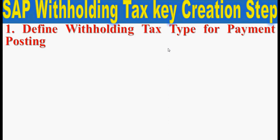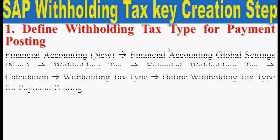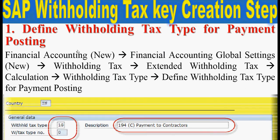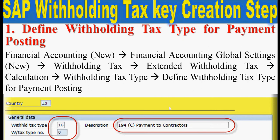First step is to define the withholding tax type for payment posting. You can also define for invoice posting. The path is: Financial Accounting New > Financial Accounting Global Settings New > Withholding Tax > Extended Withholding Tax > Calculation > Withholding Tax Type > Withholding Tax Type for Payment Posting. Click on new entries, enter your withholding tax type, then the description, and press save.